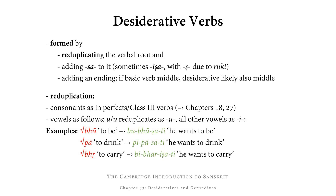The details of that you can find in Chapters 18 and 27 of the book, as well as in the reference grammar at the back of the book. Vowels are reduplicated as follows: short u and long u are reduplicated as short u; all other vowels are reduplicated as e. So, for example, from bhū (to be), we get bubhūṣati — he wants to be. What we have here is bhū, the root, which is reduplicated as bubhū, then we add ṣa (which changes into ṣa due to ruki after the u), and then the third singular ending ti: bubhūṣati.